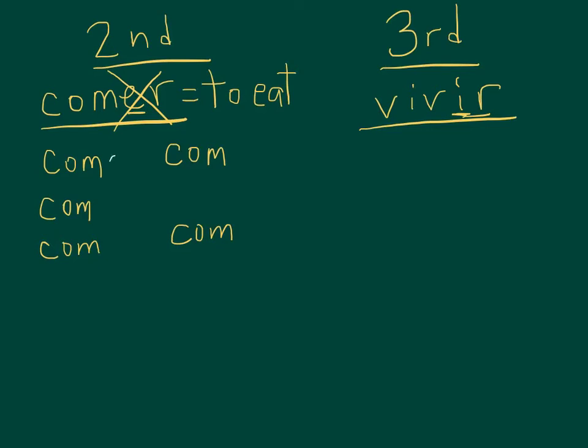And then we go back through and put on endings that will show we're working with first person or second person or third person. So yo form ending, still an o. Second person ending, es instead of the as ending you saw before. And for third singular, simply an e.